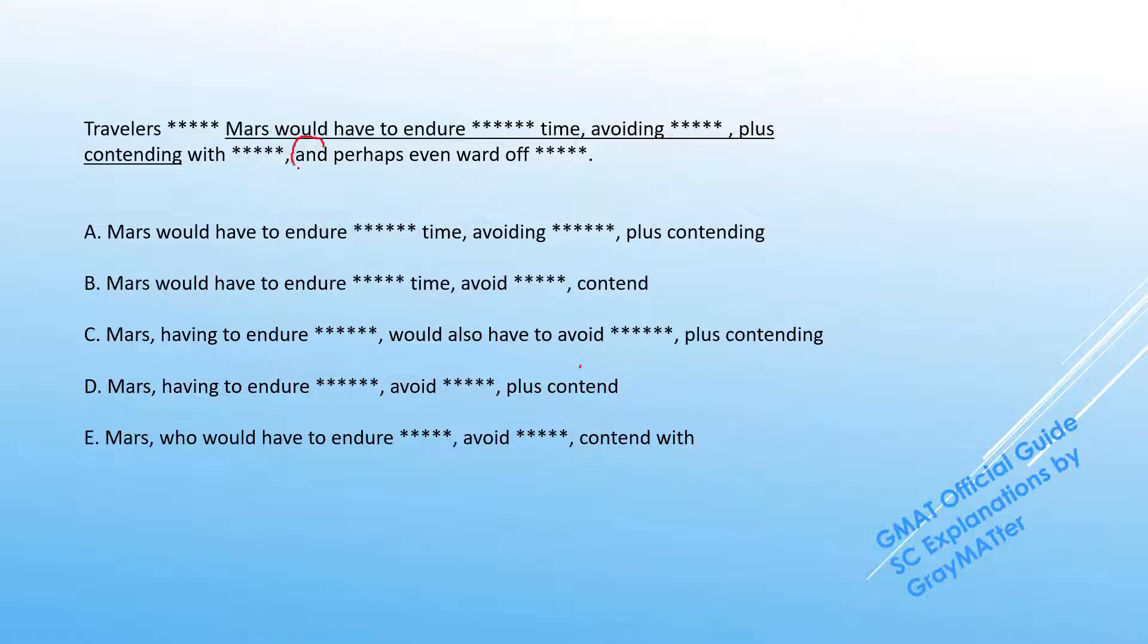We know that this question is testing for parallelism because we have the trigger word 'and'. When we have 'and', we need to check for parallelism in a list. Anything that occurs in the list needs to be perfectly parallel and balanced.